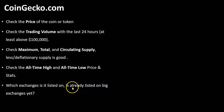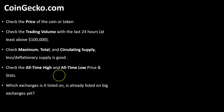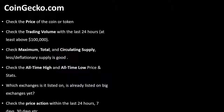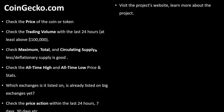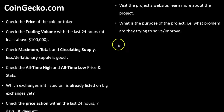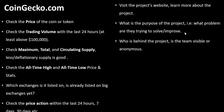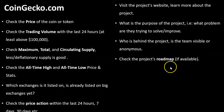Check the all-time high and all-time low prices of the particular token or crypto you are researching. You need to check which exchanges it is listed on — is it already listed on big exchanges? If not, are there any chances it can be listed on big exchanges like Binance? You want to buy before it gets listed. If it's already listed, what are the chances it can still grow bigger? Check the price action within the last 24 hours, seven days, or 30 days to see if it's consistent. Visit the project website, learn more about the project, check the roadmap — what problem are they trying to solve or improve upon? Who is behind the project?